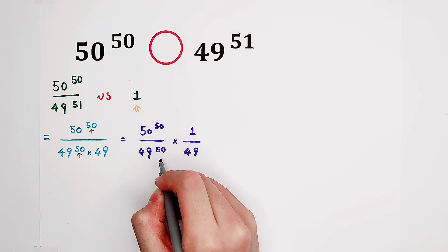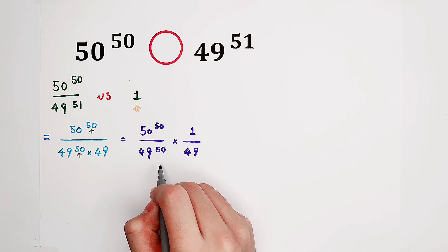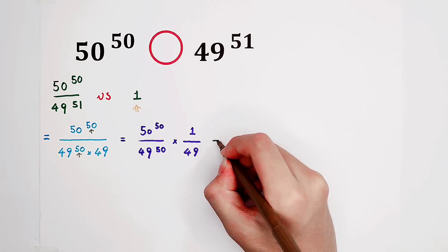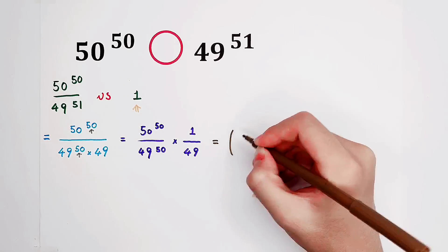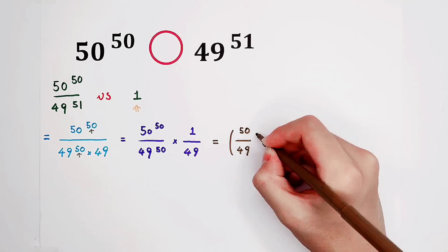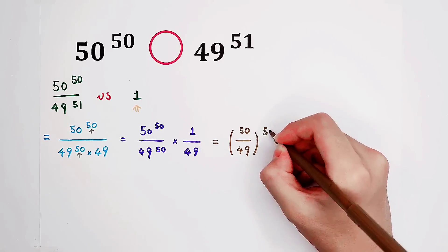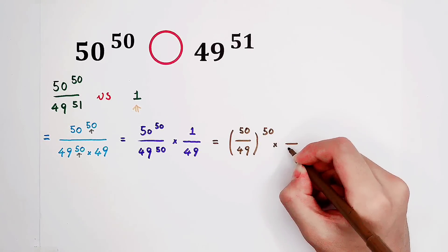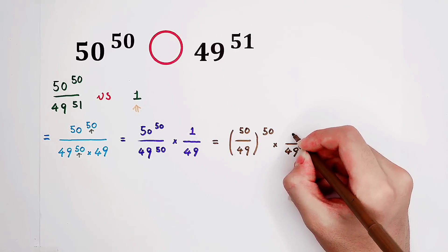A good idea. So now, 50, 50, they have the same exponent. We can take out this exponent. Therefore, it is 50 over 49, also to the power of 50, then times—oh sorry—1 over 49.